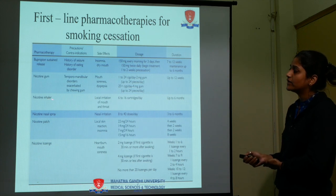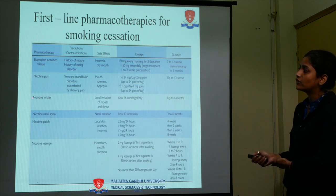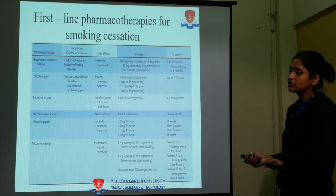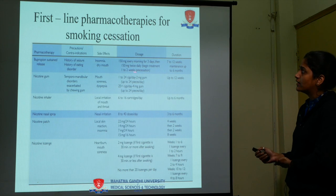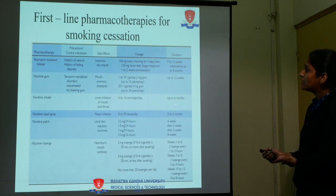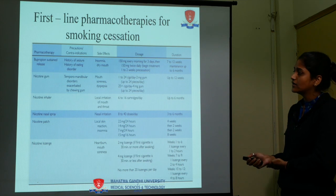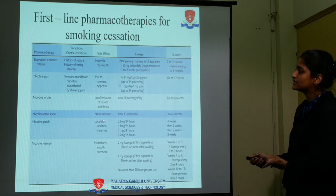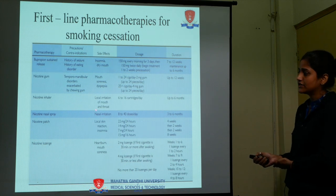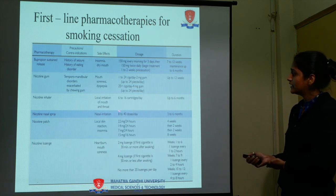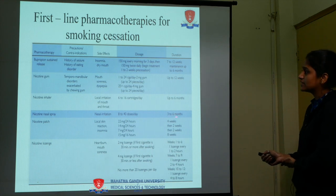Another nicotine-containing option is the nicotine inhaler. Side effects include local irritation of the mouth and throat. Doses are 6 to 16 cartridges per day with duration up to 6 months. There is also nicotine nasal spray, with side effects of nasal irritation, doses of 8 to 40 doses per day, and duration of 3 to 6 months.